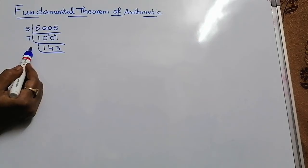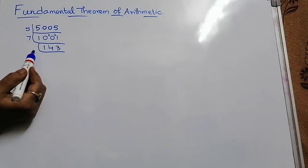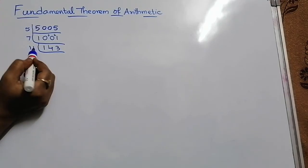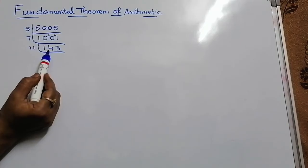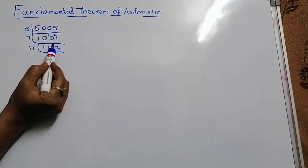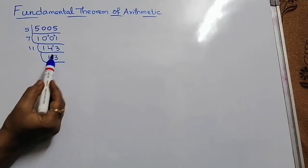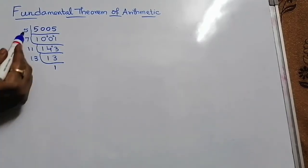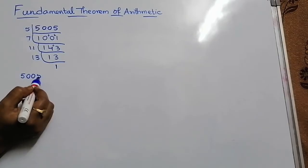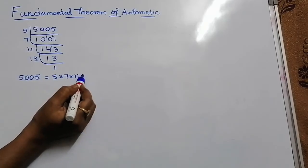Now again check all the prime numbers from the start: 2, 3, 5, 7 — nothing is divisible here. So go for the next prime number, 11. 11 ones are 11, but 14 is there; difference is 3. 33 — 11 threes are 33. Next, this is 13 — this is a prime number. 13 ones are 13. Now we are going to write the prime factorization for 5005: that is 5 into 7 into 11 into 13.